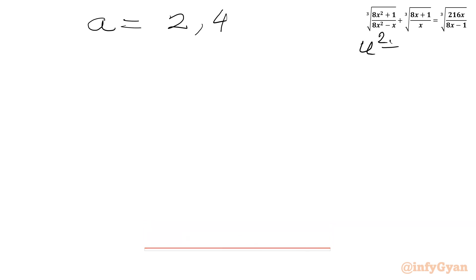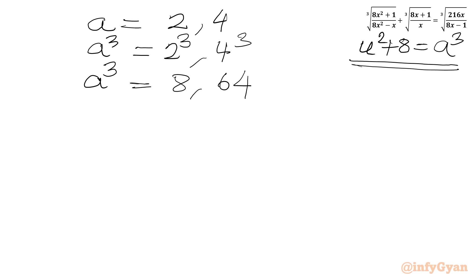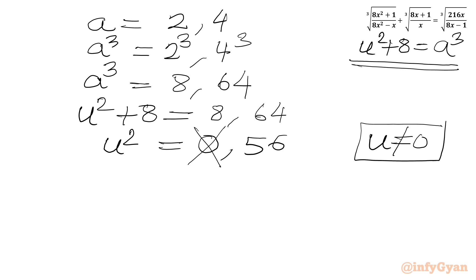Now A was our substitution where 8 plus u² equal to A³. So A³ equals 2³ equals 8, and 4³ equals 64. Replacing A³ with u² plus 8: u² plus 8 equal to 8 and 64. Subtracting 8 from both sides, u² equal to 0 and 56. Since u cannot equal 0 to find x, or for principal solutions, we reject u² equal to 0. So u² is equal to 56 only.